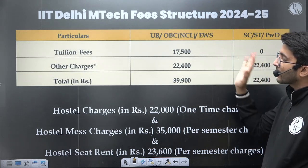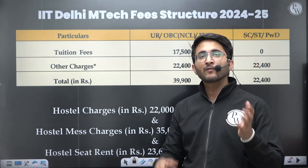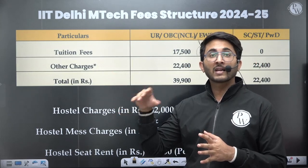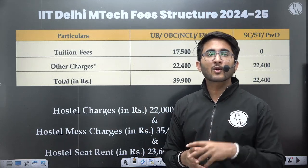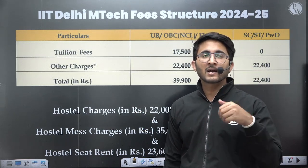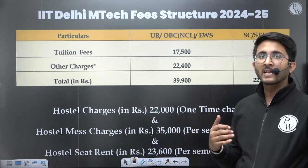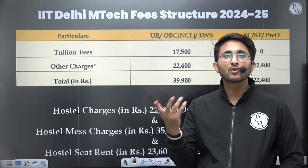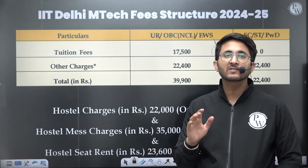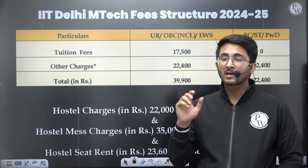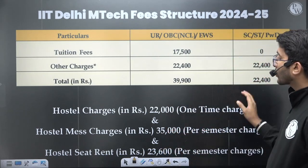Hostel charges in IIT Delhi depend on multiple factors. There are centralized hostels like Dronagiri and Saptagiri, and different hostels have different facilities, so the fee structure changes accordingly. There is also a bit of a hostel crunch — in the first year of M.Tech you may not be able to get a hostel; you might get one in the second year. The number of hostels is limited and IIT Delhi cannot easily expand because the airport is nearby, creating some restrictions.